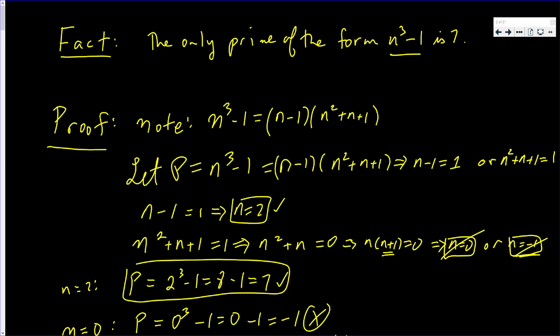Nice quick proof. I just used two facts. This fact and that. And if P is prime, if P is equal to this times that, either this is 1 or that's 1.